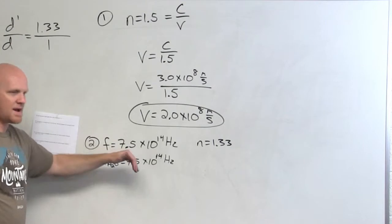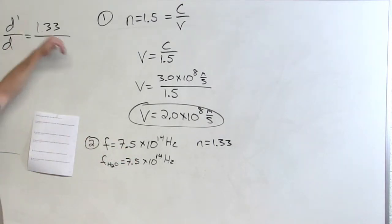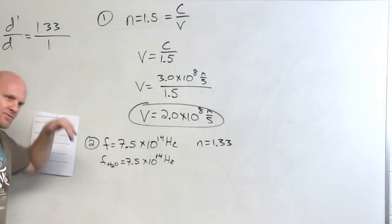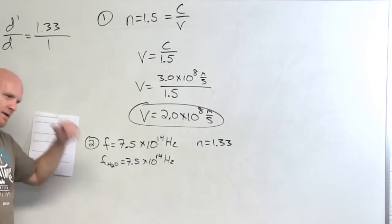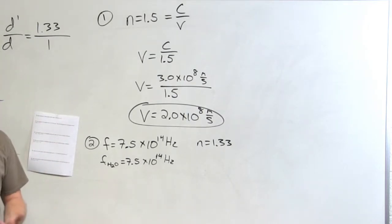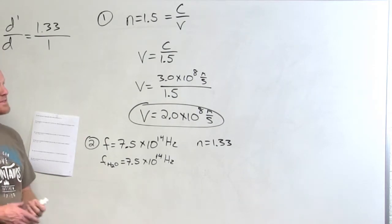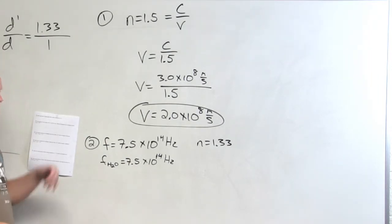And so if you look, the light is passing with a given frequency from the air to the water, and that frequency, it's still the same frequency. So the frequency is kind of a rate at which the photons are going from the air to the water.